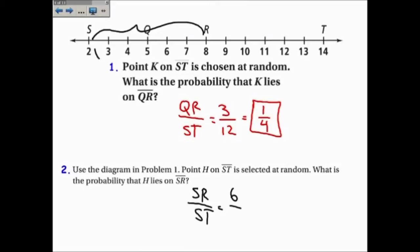SR right here. 8 minus 2 is 6, out of ST, which is 14 minus 2, which is 12, and I get one-half.